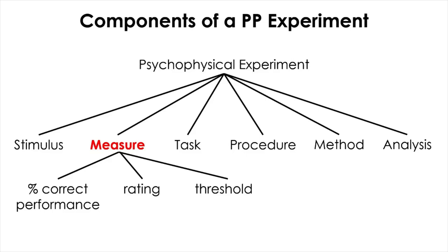The threshold used to be defined as the absolute minimum — the weakest stimulus strength or intensity that results in a change of perception. But later, this definition has been expanded to mean the strength of signal required to attain a specific level of task performance, for example, 75% or 90% correct performance level.